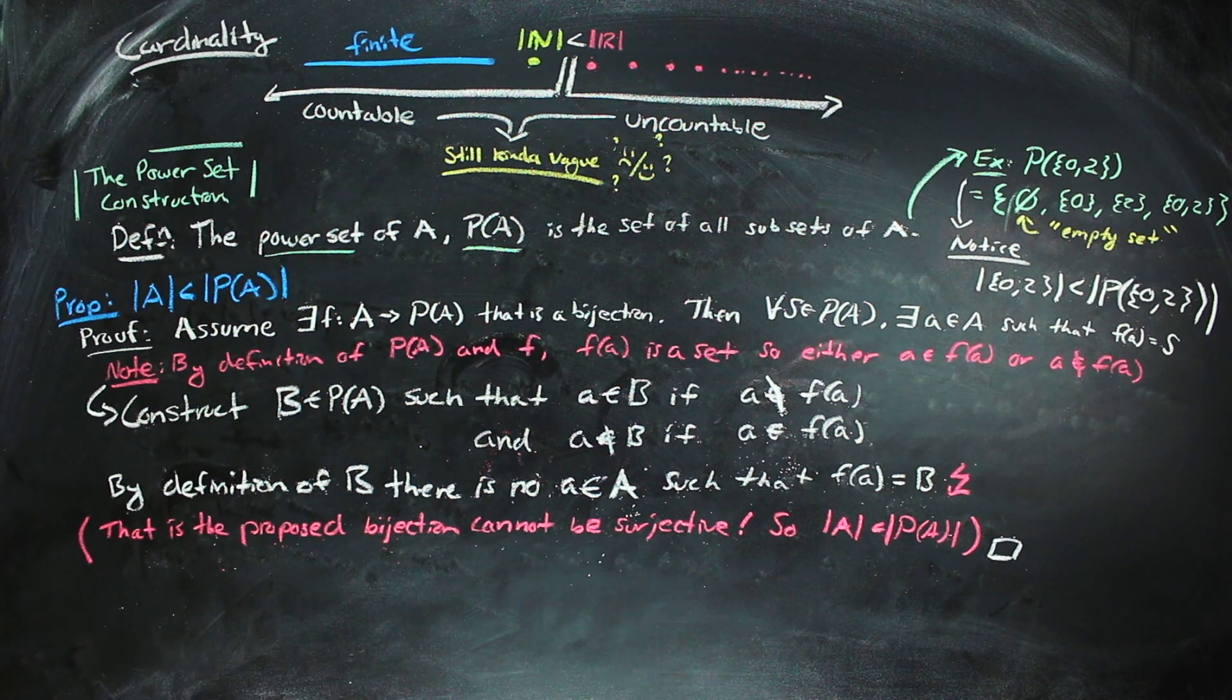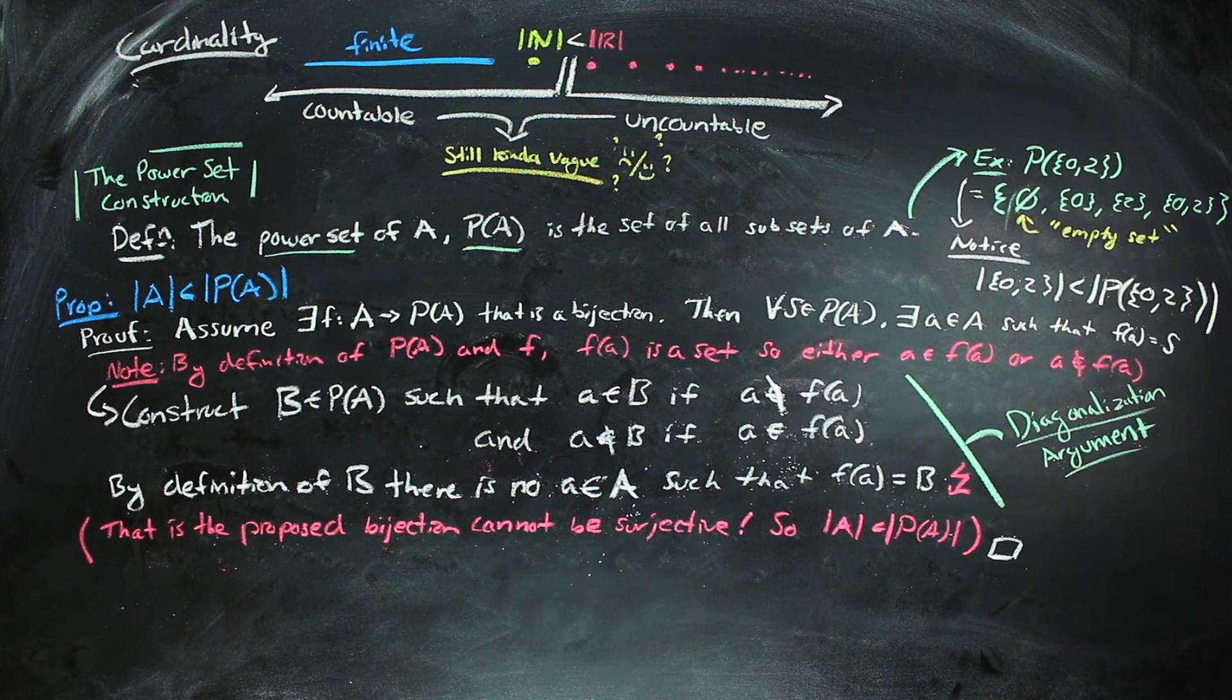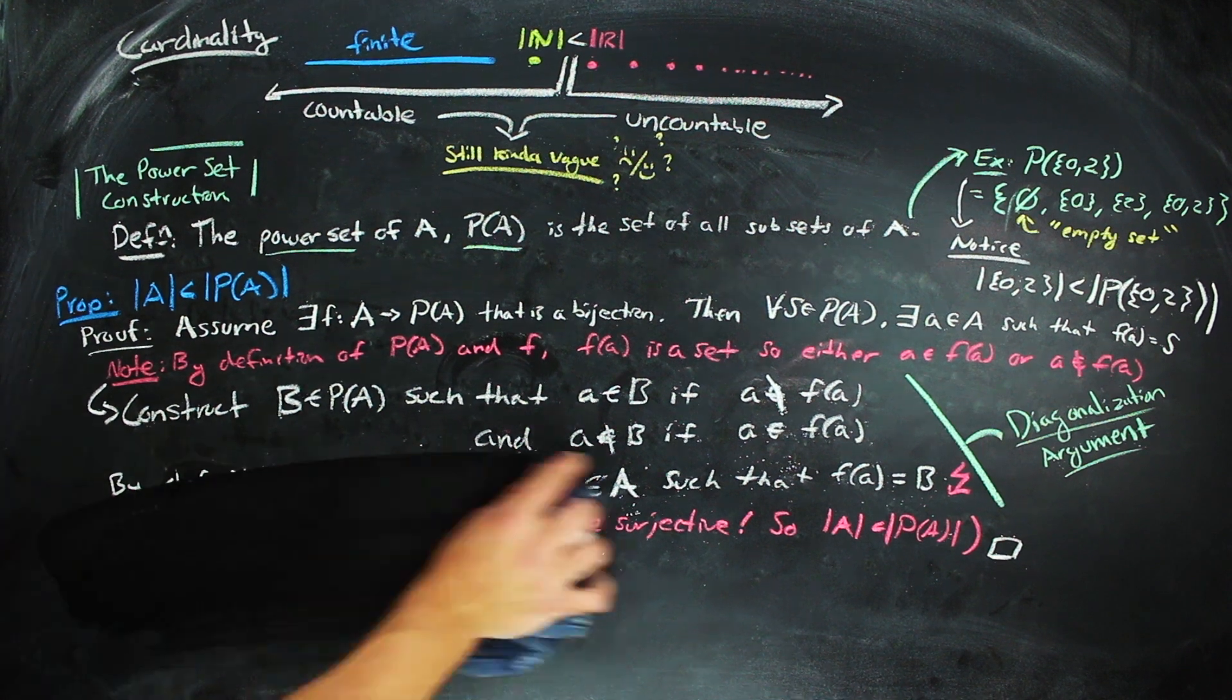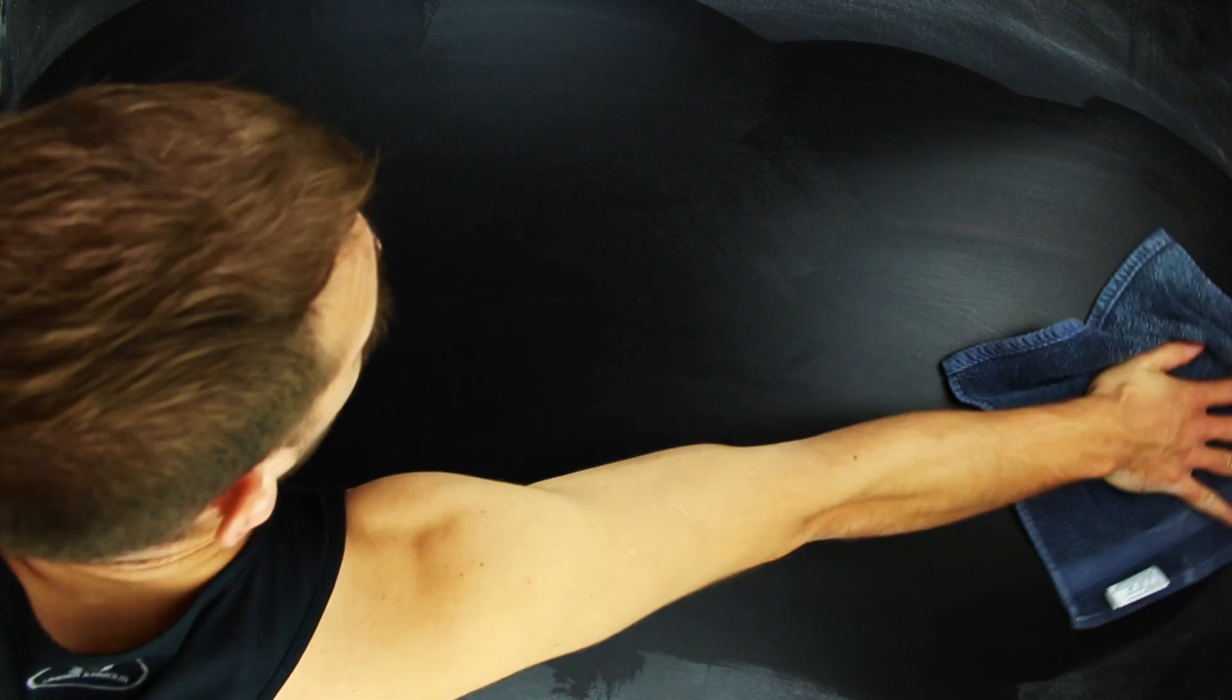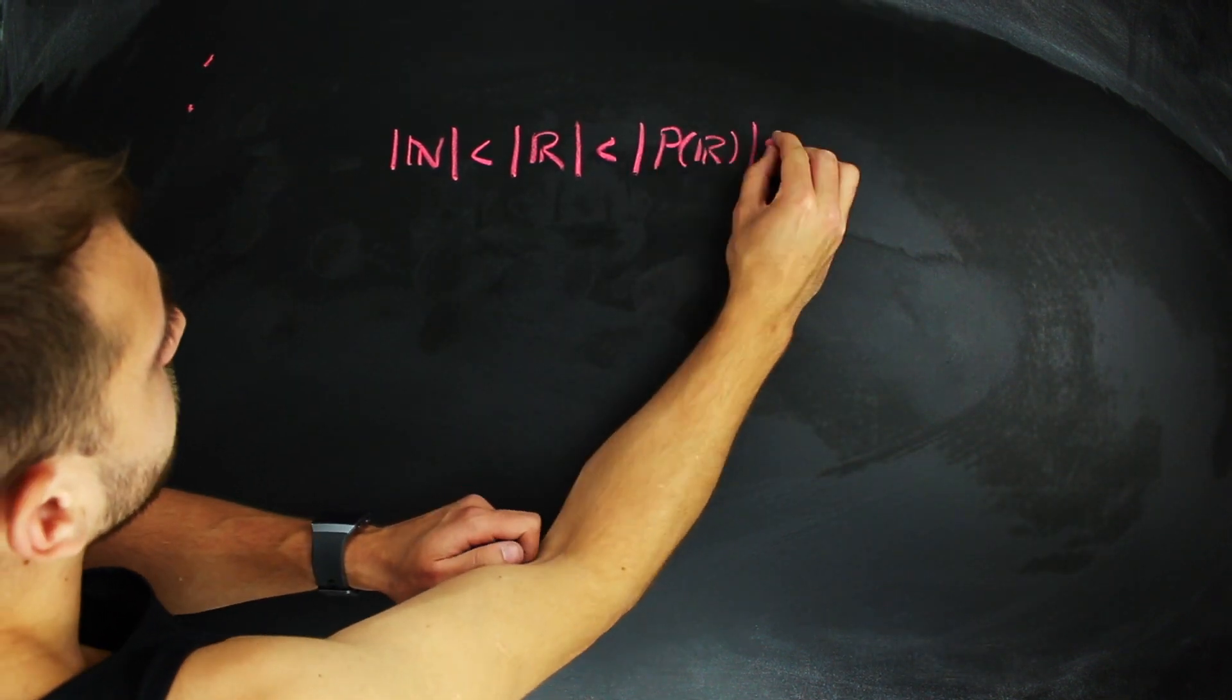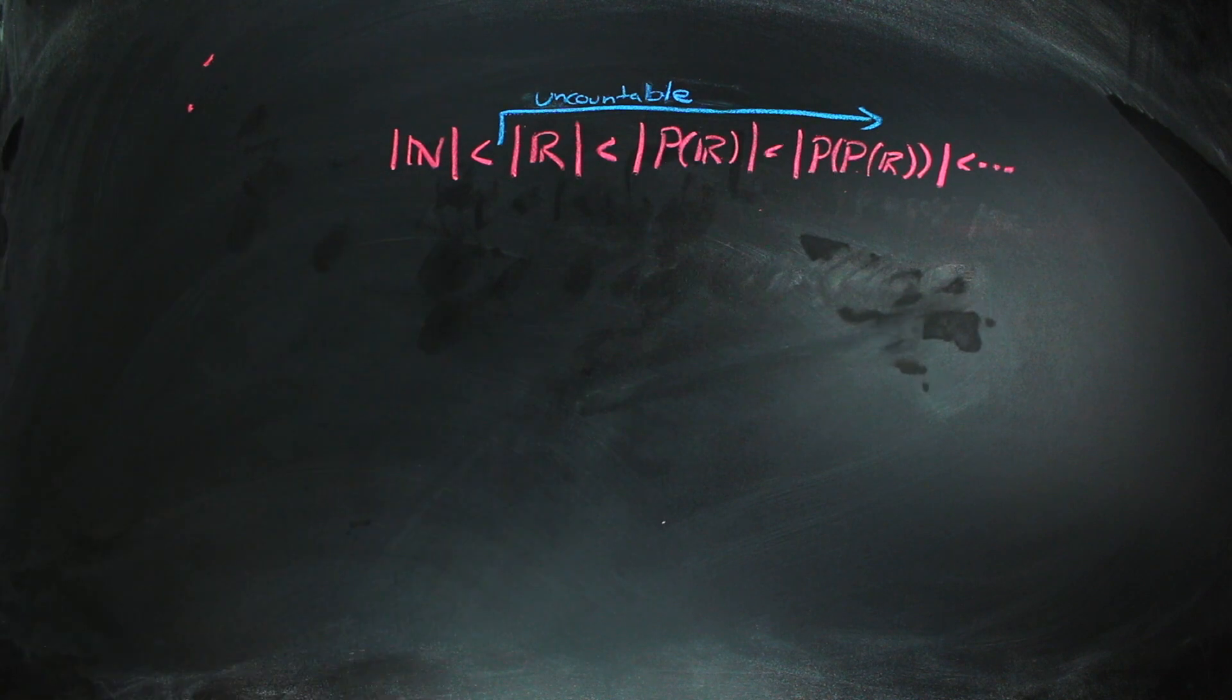This proof, and the one that is used to show the reals are larger than the naturals, use an argument style called diagonalization. So if you're interested in searching around for more similar proofs, it's used a lot in other fields of math like in computing theory as well. But the point of talking about the power set construction was to show that uncountability is really vague. Using the power set, we can construct larger and larger infinities in terms of cardinality. Hence the title of this video.